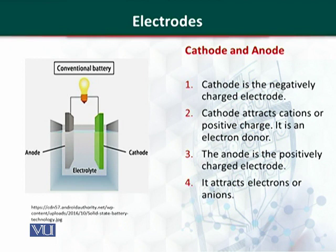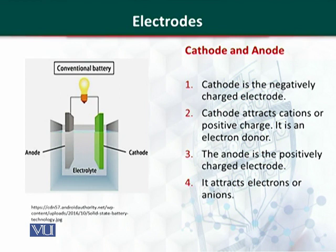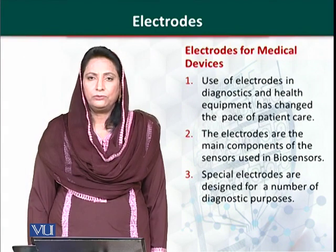We have two common examples of electrodes: one is a conventional battery cell and the other is a dry battery cell. In these battery cells, both cathode and anode electrodes are used, which create a potential difference. A conventional battery cell uses liquid electrolyte, whereas a dry battery cell uses powdered or gel electrolyte. These cells are used in many important fields of our lives.